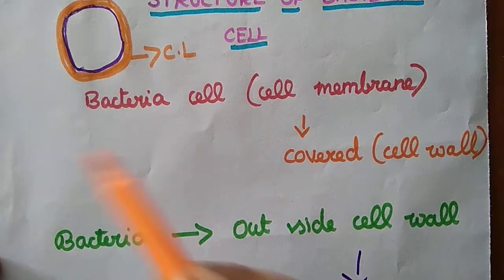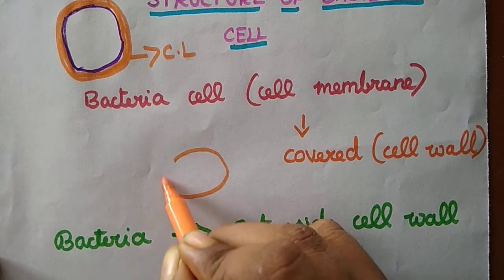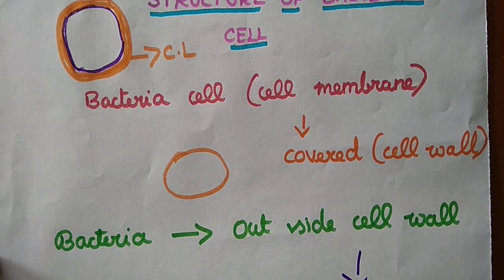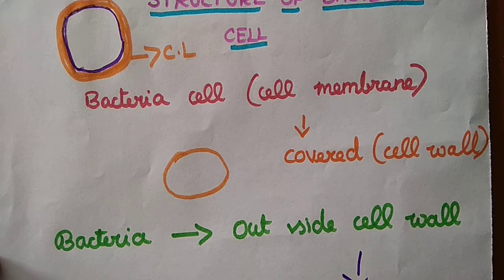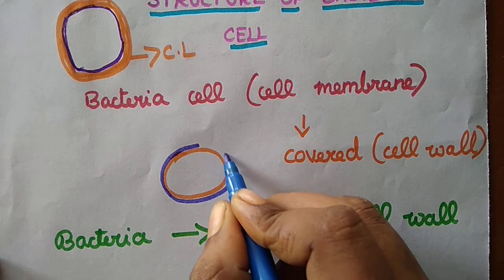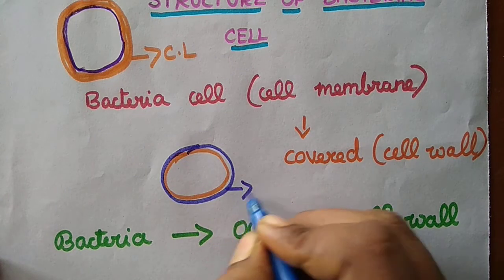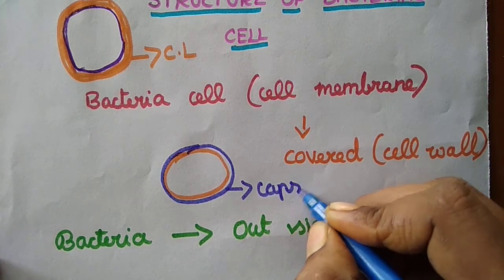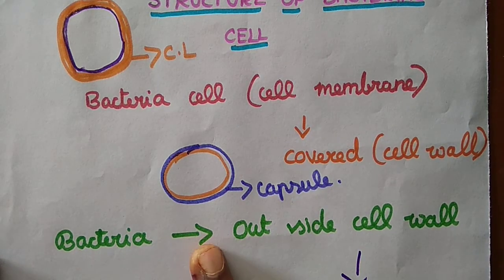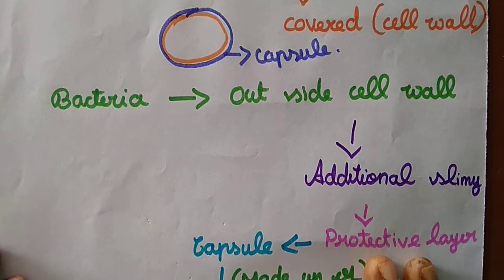Outside of the cell wall, in some bacteria — not all bacteria — they have a cell wall and additionally another protective cover. The name is capsule. So the slimy protective layer outside the cell wall is called the capsule.